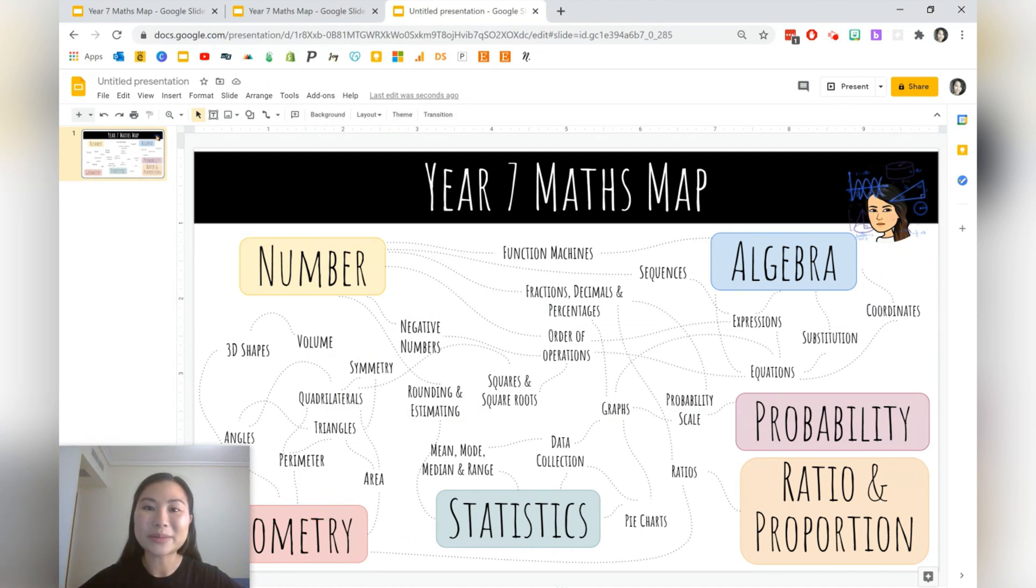This is what the subject map looks like once you've added all your different connections. It does look quite nice visually to be able to see which concepts and topics are related to each other. So now we're ready for the next step. In the next step we're going to be creating topic slides. So for example the first slide that I'm going to be creating is for number.